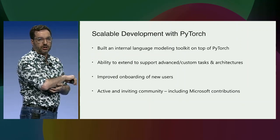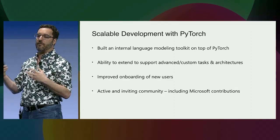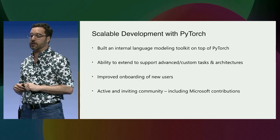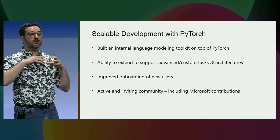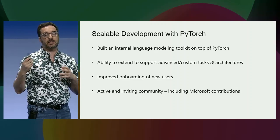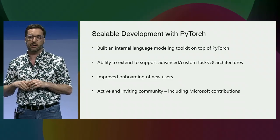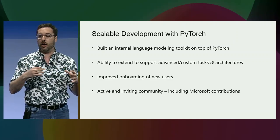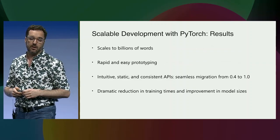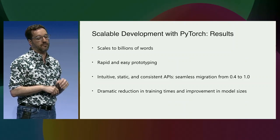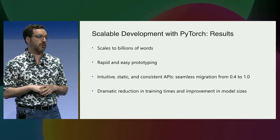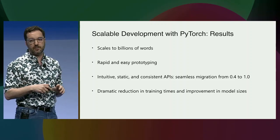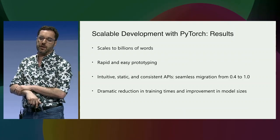So what we did was, in partnership with Facebook, we worked through PyTorch and evaluated it as a potential option, and it immediately met our needs. We built our internal language modeling toolkit on top of PyTorch, using the native extensibility that PyTorch provided to build advanced and custom tasks and architectures. It massively improved onboarding of new users, and it was an open and inviting community, which meant we could help move all of the advances we were making internally upstream. As a result, we're able to scale those language modeling features to billions of words with very fast prototyping, and our tests and systems have been extremely stable because the API has been static and well thought through.